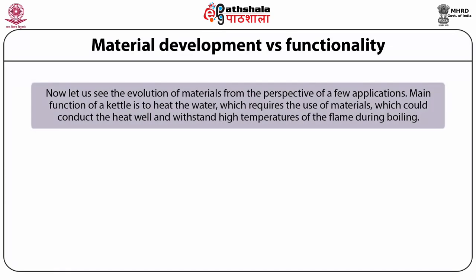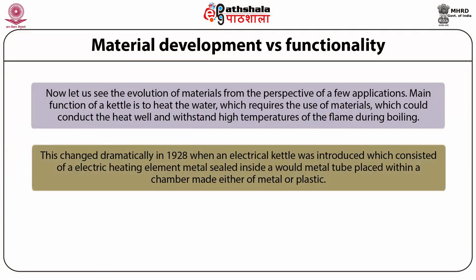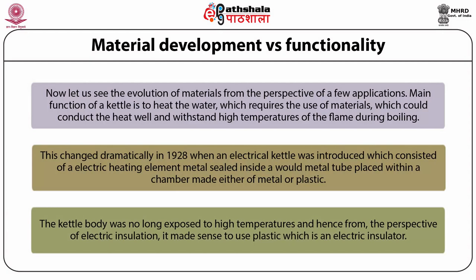Let us see the evolution of materials from the perspective of a few applications. The main function of a kettle is to heat water, which requires materials that conduct heat well and withstand high temperatures. Earlier generations used metals such as iron, copper and bronze. This changed dramatically in 1928 when an electric kettle was introduced, consisting of an electric heating element sealed inside a metal tube placed within a chamber of metal or plastic. The kettle body was no longer exposed to high temperatures, making plastic — an electrical insulator — the sensible choice.